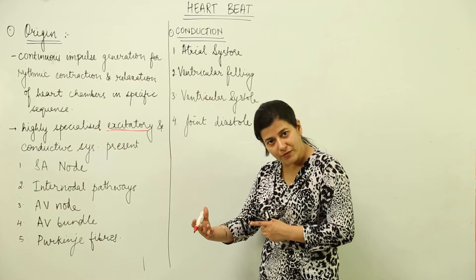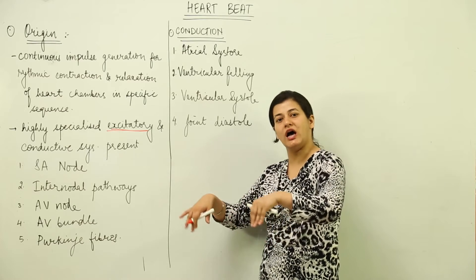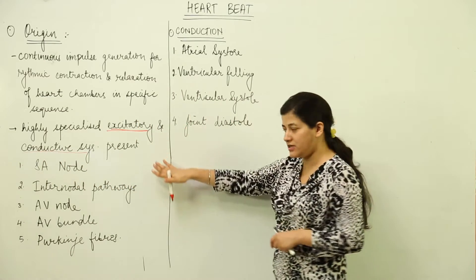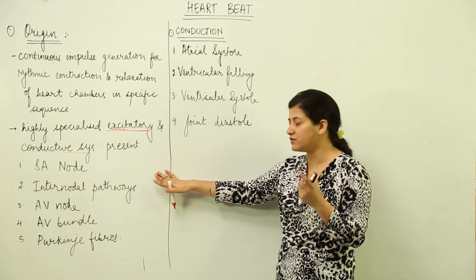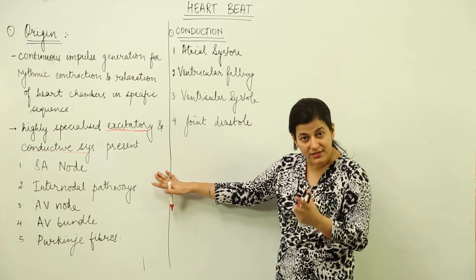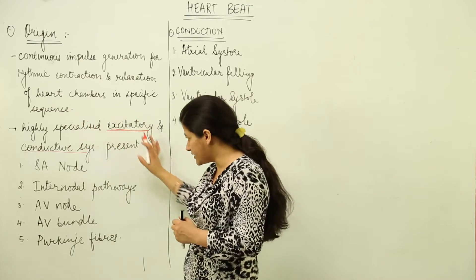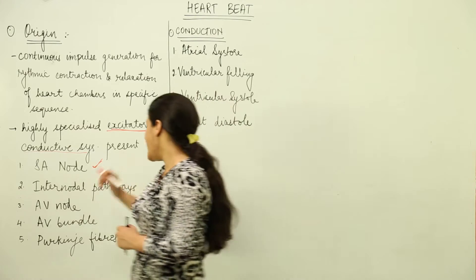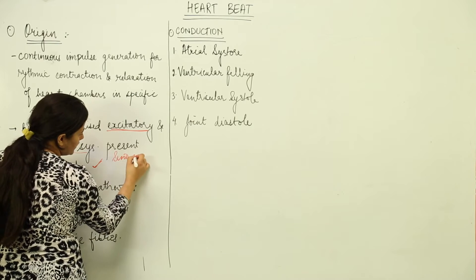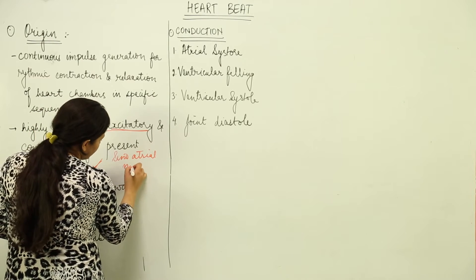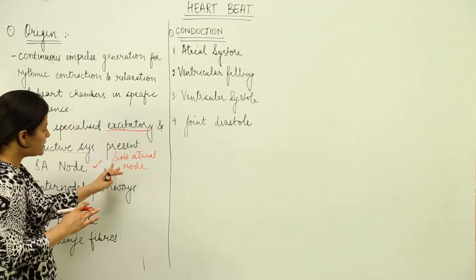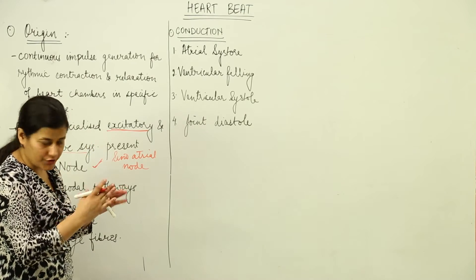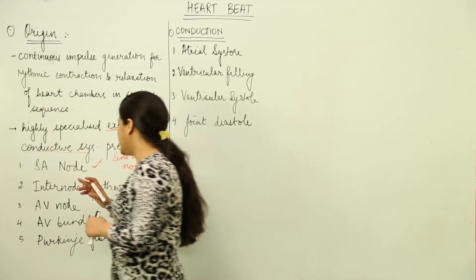Once the excitation has started in the form of an impulse, that impulse has to radiate through the heart completely, and that is carried out by a conductive system. These systems consist of muscle fibers, not nerve fibers. The first component to remember is the SA node — SA node stands for sinoatrial node, and it is also known as the pacemaker.